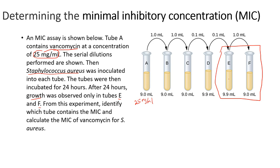Since tubes E and F both had growth, that means tube D has the lowest concentration of vancomycin where there was no growth. So tube D is the MIC tube as a result. Now it's just a matter of determining what the concentration of vancomycin is in tube D.